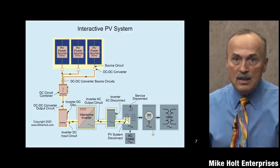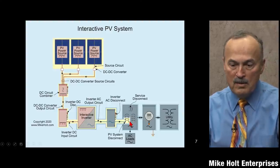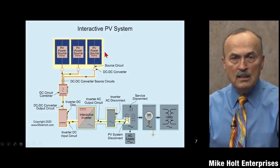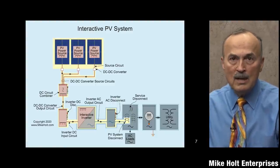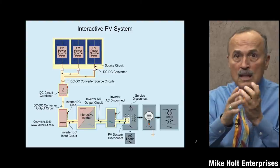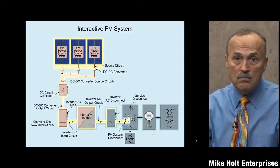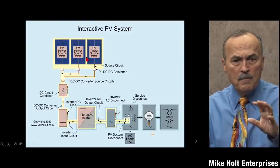Let's look at a PV system. One thing I try to do on these graphics is highlight in yellow everything considered part of the PV system. We start with the power source - we're generating energy. The sun hits something, causes electrons to move in a given direction, and the more of these cells you put together, the more you're going to generate. So we have a power source.